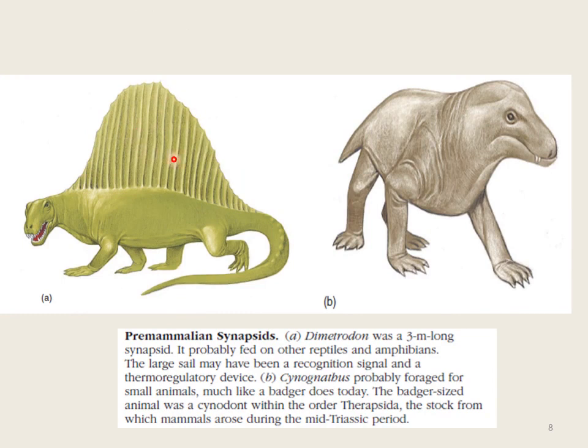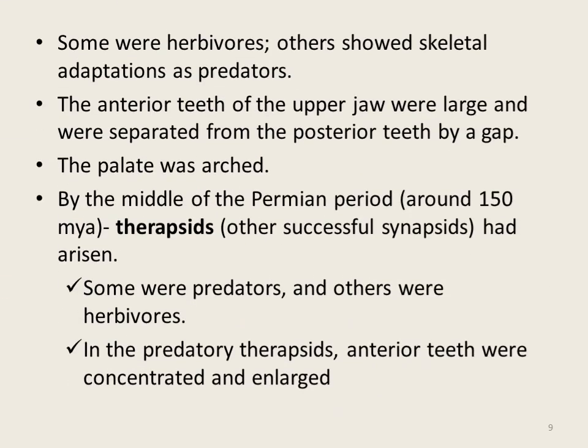In this figure you can see a sail on the back of a pre-mammalian synapsid, which they used as a thermoregulatory device. Some early synapsids were herbivores, while others showed skeletal adaptations to increase their effectiveness as predators. The anterior or front teeth were large and separated from the posterior teeth by a gap, which accommodated the enlarged anterior teeth of the lower jaw when the jaw was closed. The palate was also arched or curved, which strengthened the upper jaw and regulated the air passage or breathing.